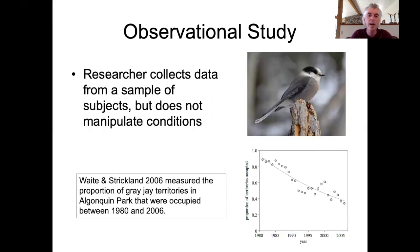The second type of evidence that we'll talk about today is observational evidence. In an observational study, the researcher collects data on a sample of subjects but doesn't perform any sort of manipulation on those subjects. For example, Waite and Strickland measured the proportion of grey-jay territories in Algonquin Park, Ontario, Canada that were occupied between 1980 and 2006 to document the decline in the abundance of grey-jays within Algonquin Park.